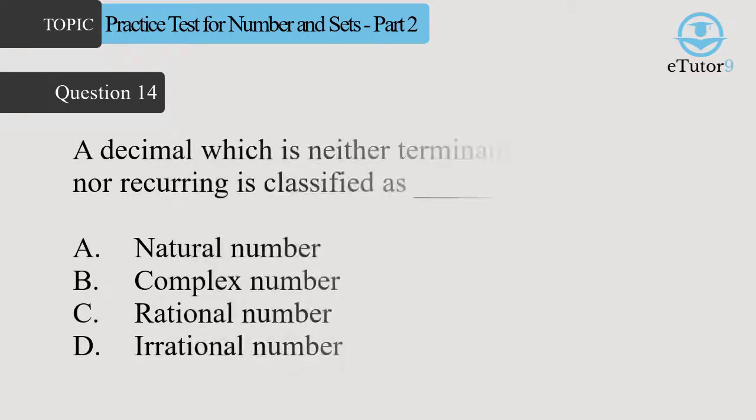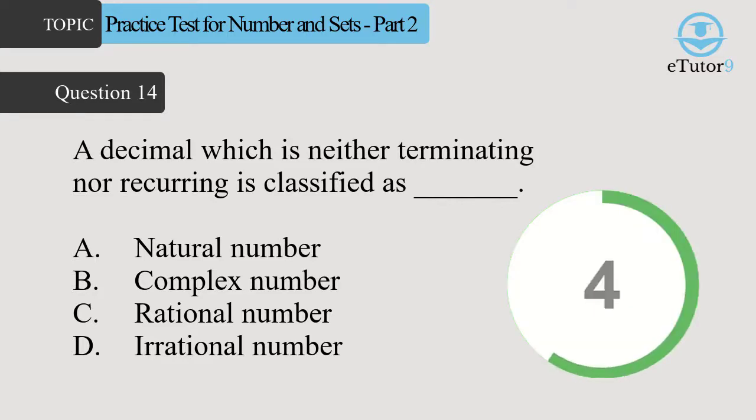A decimal which is neither terminating nor recurring is classified as blank. Answer is D. Irrational numbers.